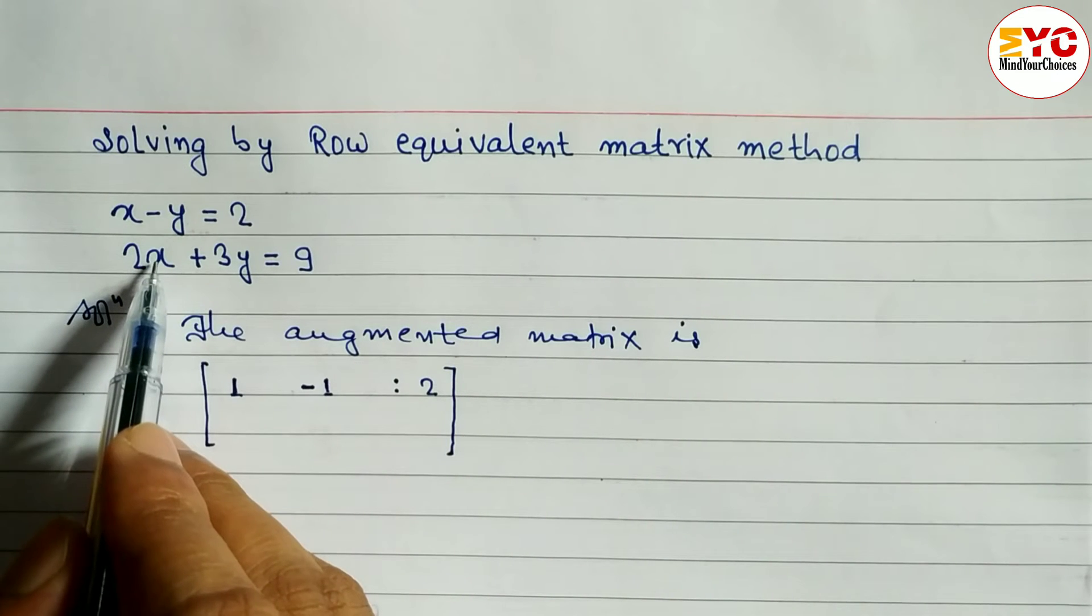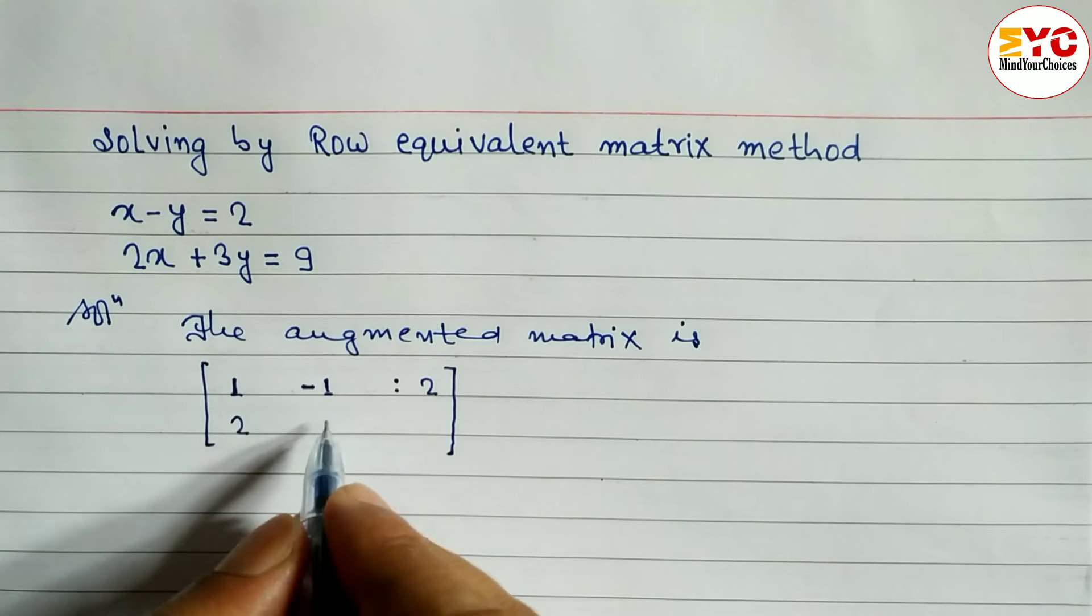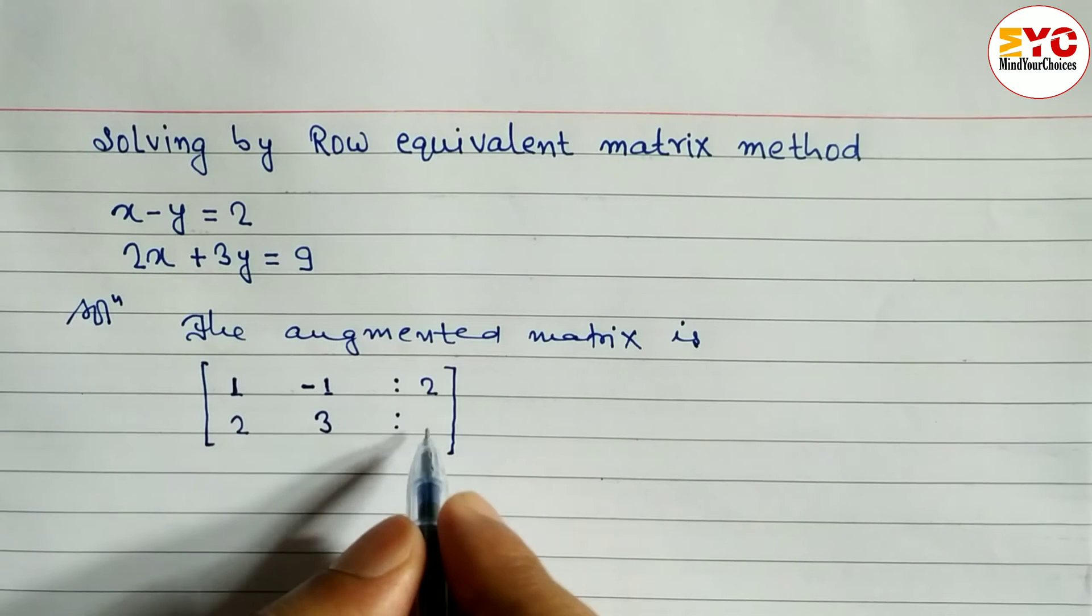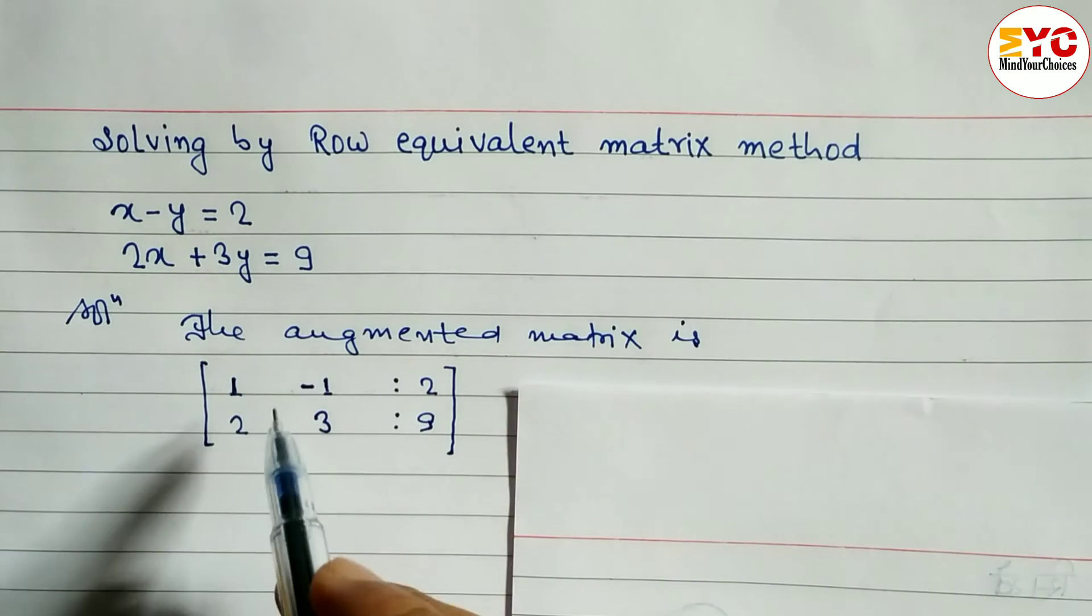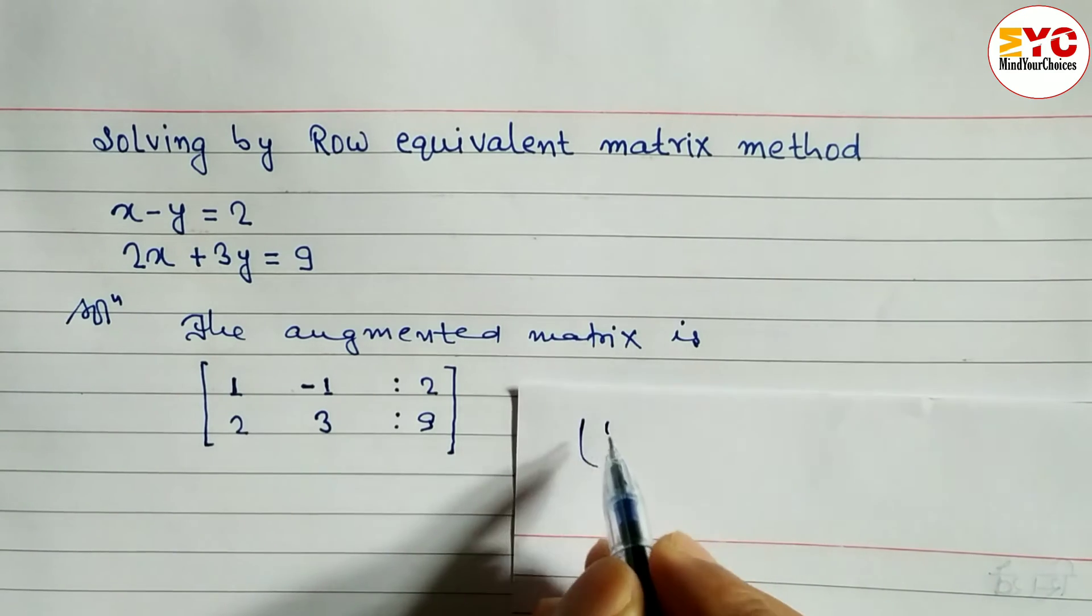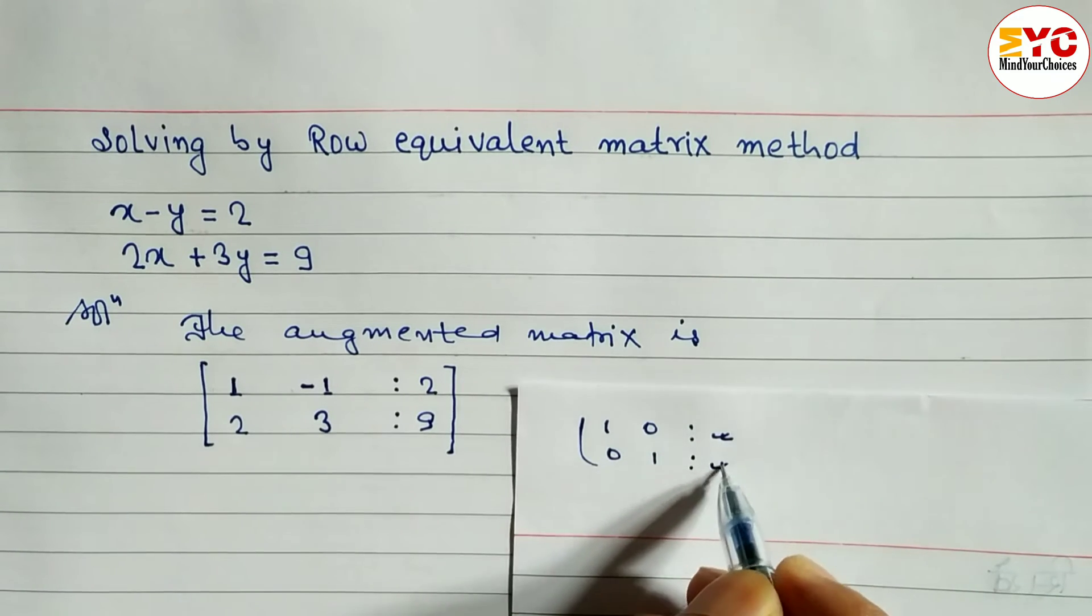After that, what is the coefficient of x? 2. So we have to write here 2. Coefficient of y is 3. So we have to write here 3. And constant number is 9. So we have to write down 9. Our main aim, our first aim is to convert this one, these elements in the form of 1, 0, 0, 1.